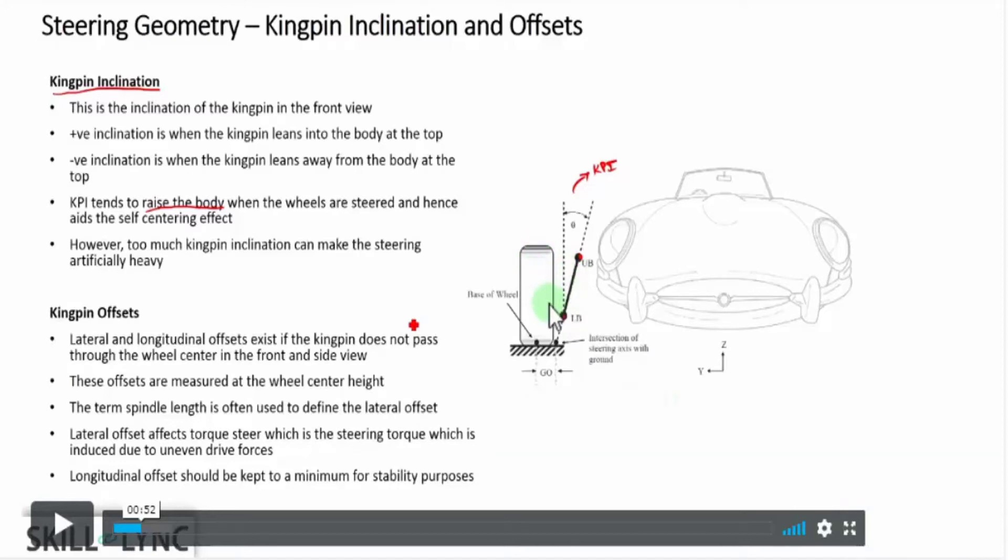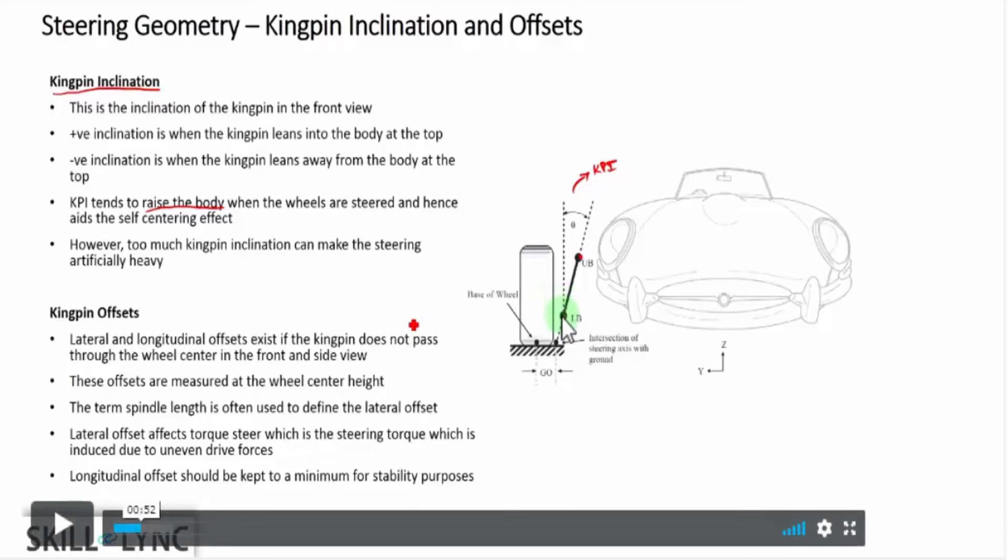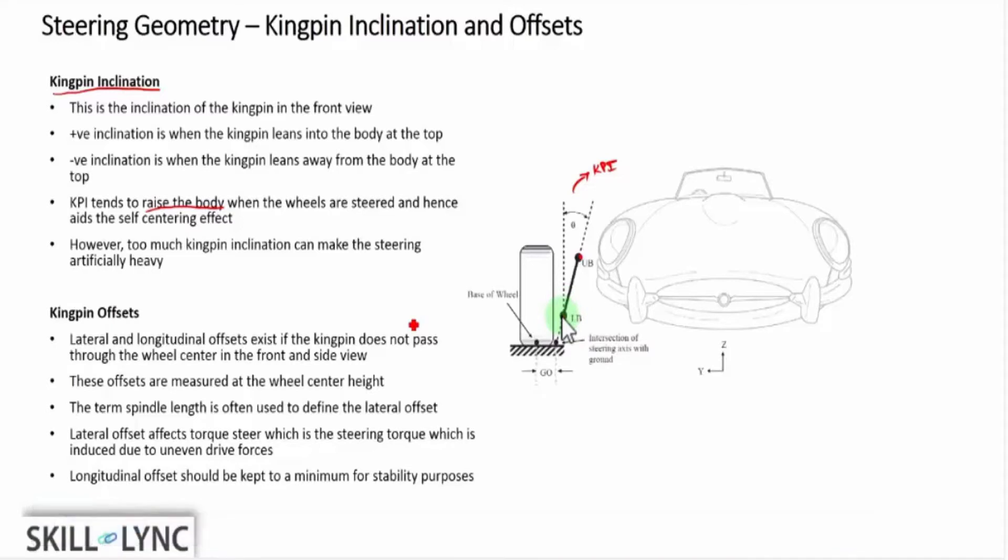Now let me teach you a shortcut. In general, if the axis of the kingpin is inclined or is oriented towards the body, then the sign convention is typically positive. So in this particular case, you can see that when the KPI is towards the right hand side, it's actually going towards the body, right? And that's why theta is going to be positive.